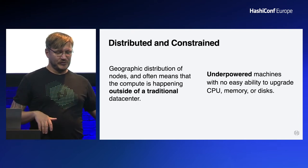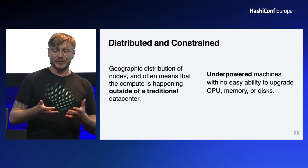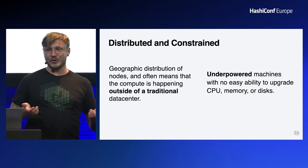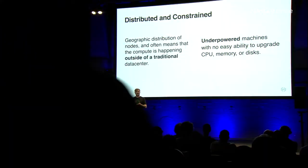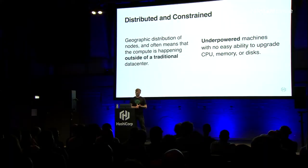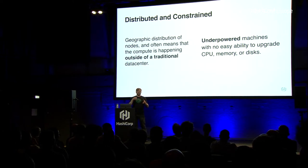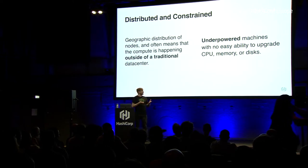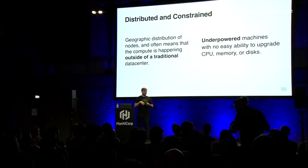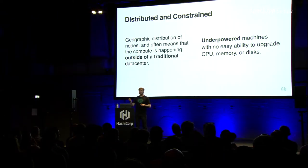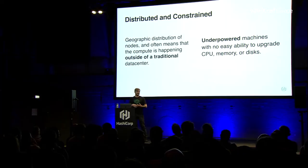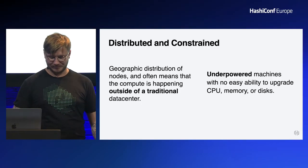Edge workloads are sometimes run on underpowered machines — that could be in CPU, memory, or disk I/O. And unlike running on EC2, they're harder to upgrade. When we look at the actual edge compute markets, we'll understand more of why that is.